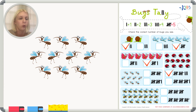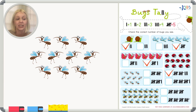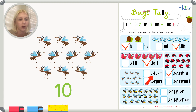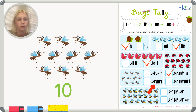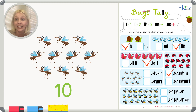Now we've got mosquitoes. Count with me: one, two, three, four, five, six, seven, eight, nine, ten. Ten means two groups of five — five, ten. Let's find that in our choices. One group of five and another group of five — that's ten. The other option has two groups of five plus one, which is eleven. We need ten, so the check goes here.